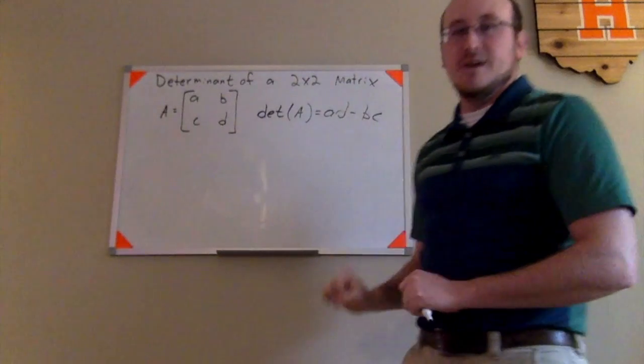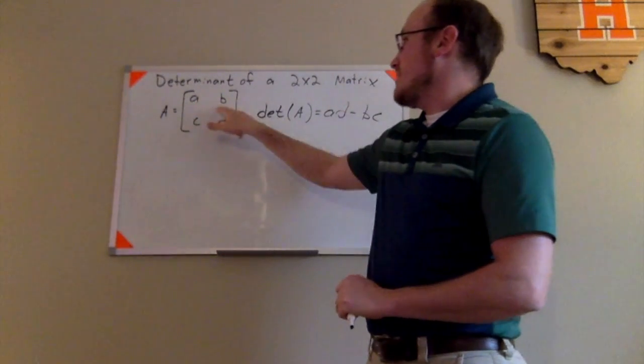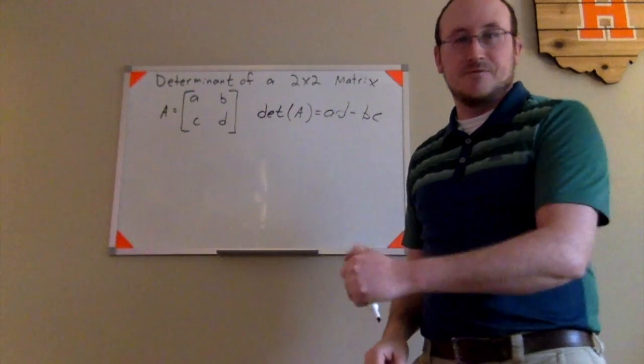So here I have matrix A, which is this 2x2 matrix with entries A, B, C, and D. I'm doing this in the abstract to give you the formula.